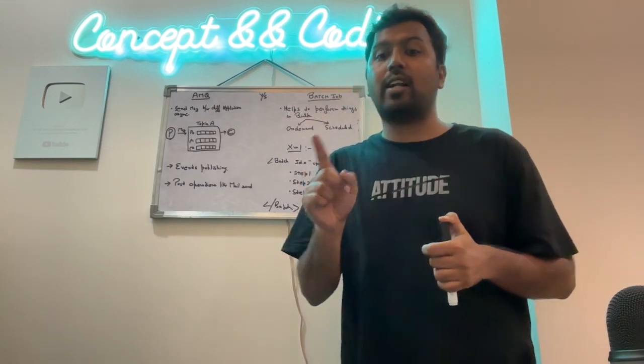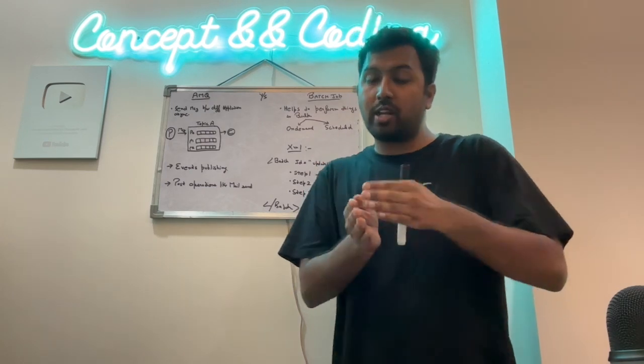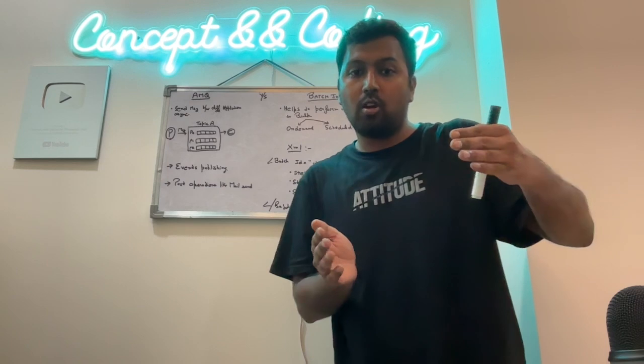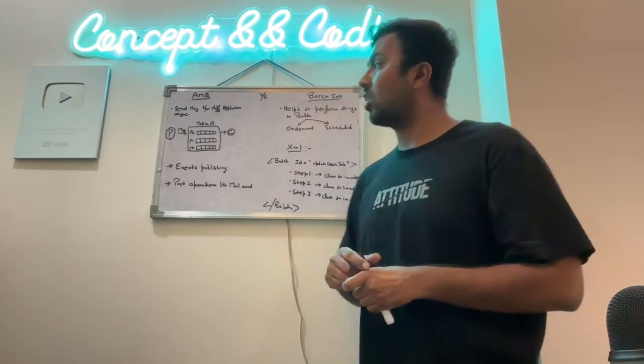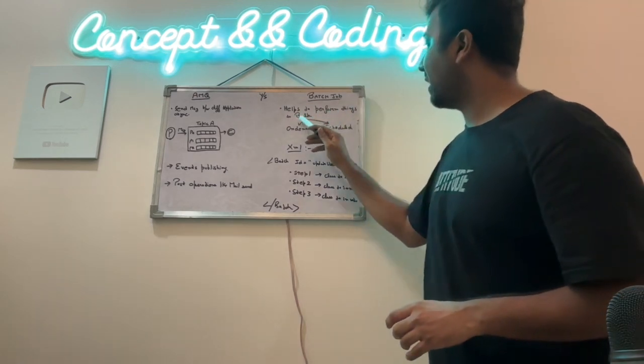So it is keep on accumulating for what all users it has to transfer money. It doesn't do it instantly. As soon as you say transfer money, it will keep on accumulating and after a particular time, a batch runs which processes all those tasks in bulk. So that's where the batch job comes into the picture. Helps to perform things in bulk.